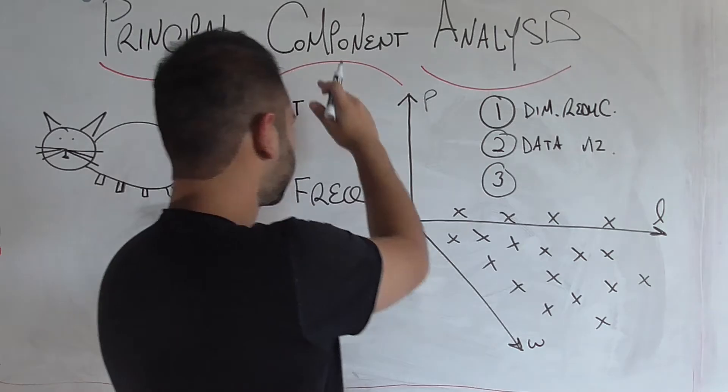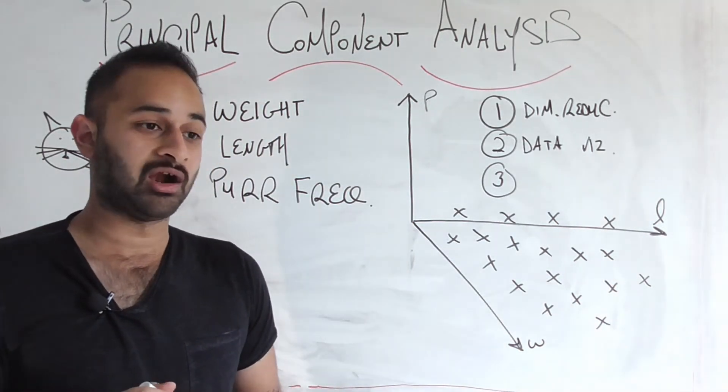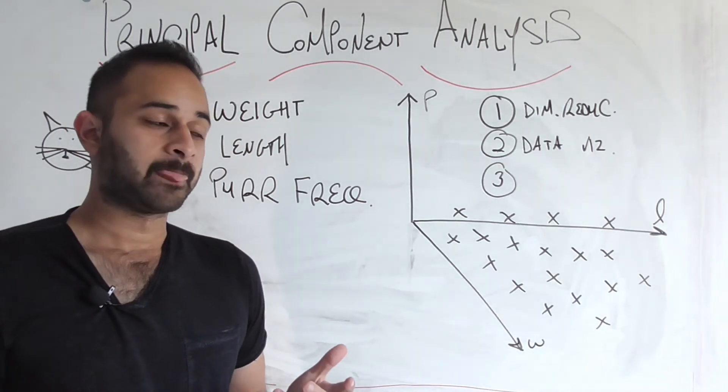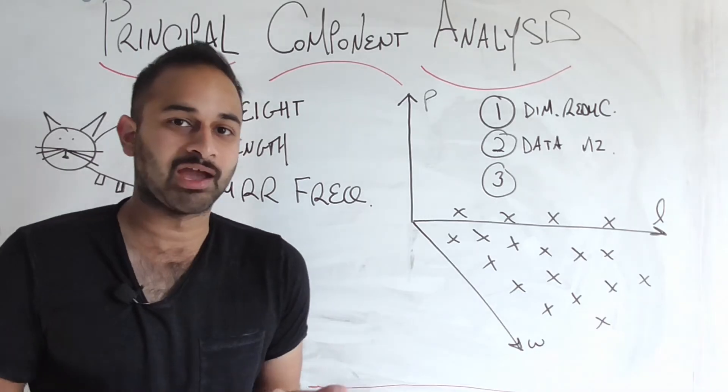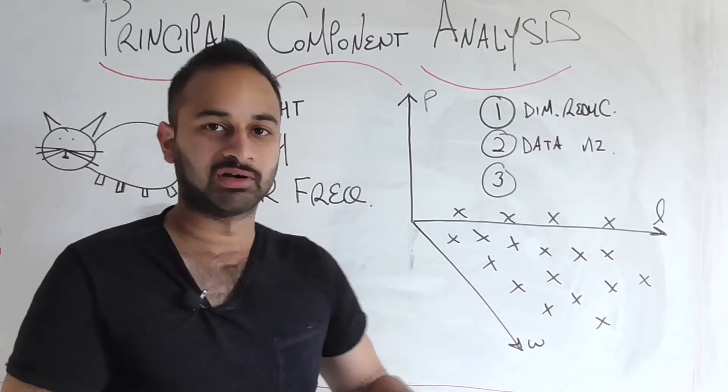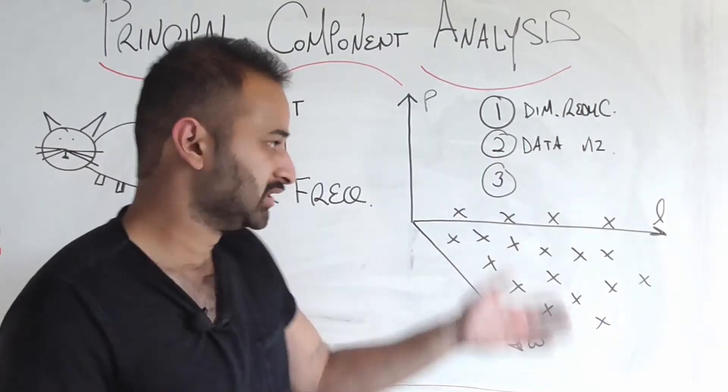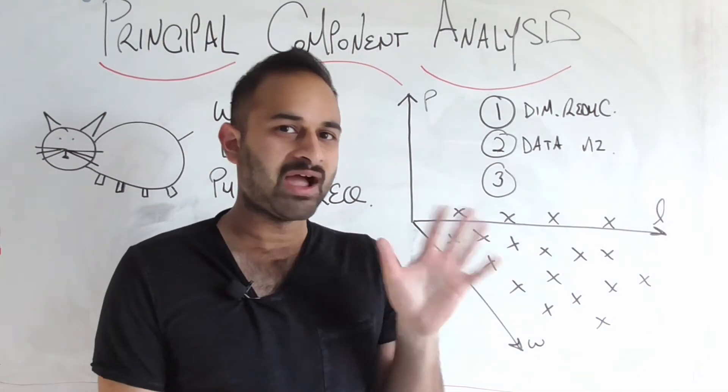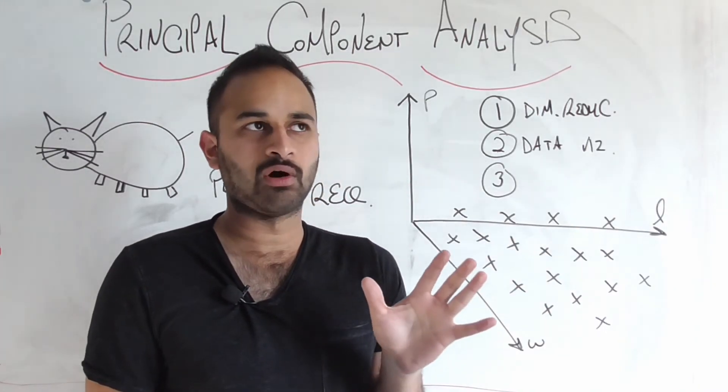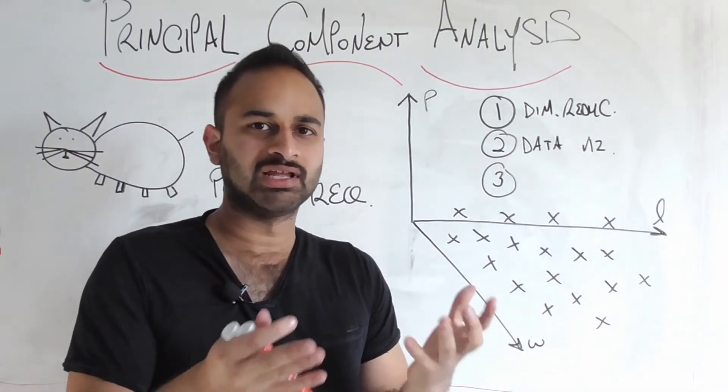Imagine instead of just three things about cats we're way in the future where we have a hundred different variables about cats that we care about or potentially care about. Obviously I don't know how to plot in a hundred dimensions. I can't currently draw in a hundred different directions. So the most we can draw as three-dimensional beings is basically in a three-dimensional plane.